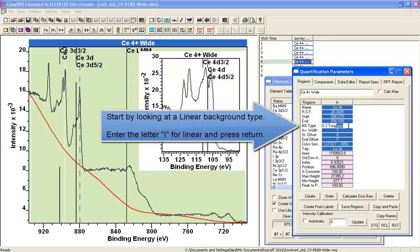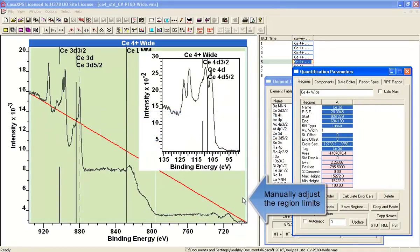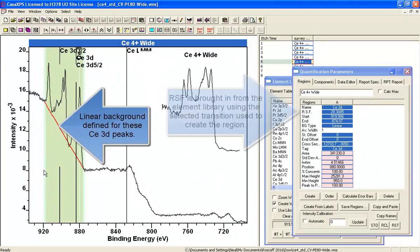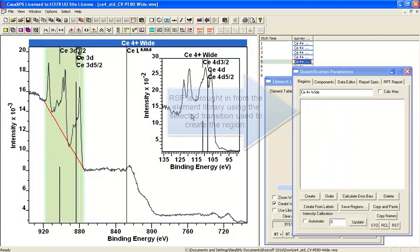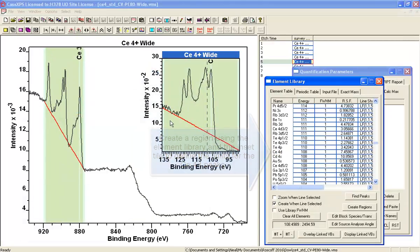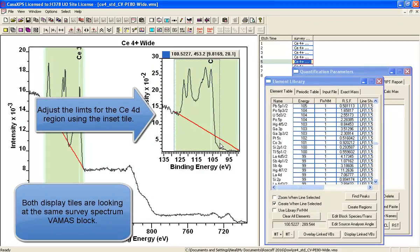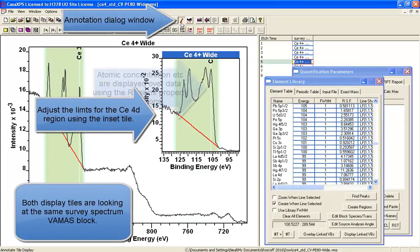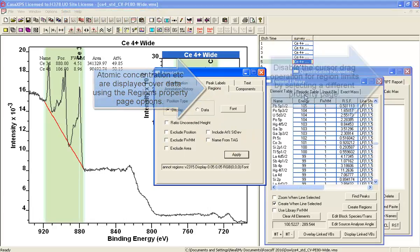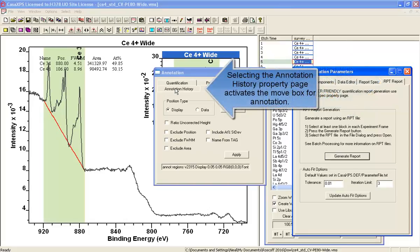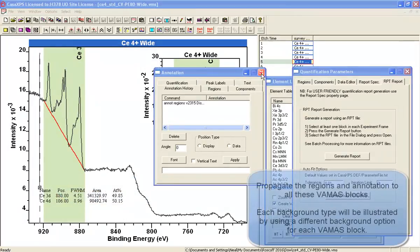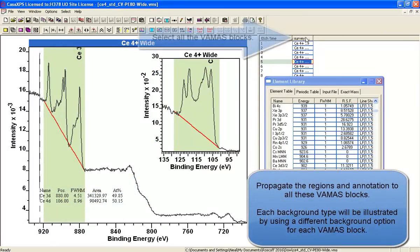We'll begin by creating linear backgrounds for both of these peaks, and then we'll add some annotations so we can see what the outcome is when we assess the background subtracted data in terms of the percent area of the peaks scaled for these relative sensitivity factors. We've got two peaks now set up, and we'll add an annotation table using the regions option. The outcome should be for this annotation table about 50-50, and that's what we've got for this linear background.